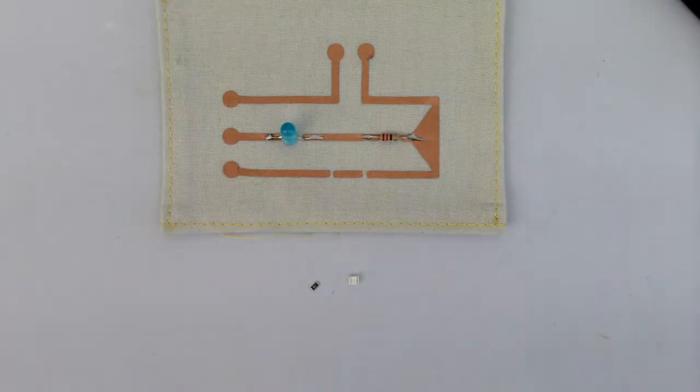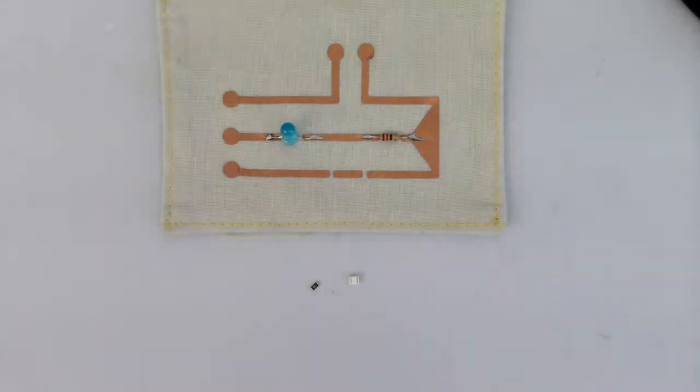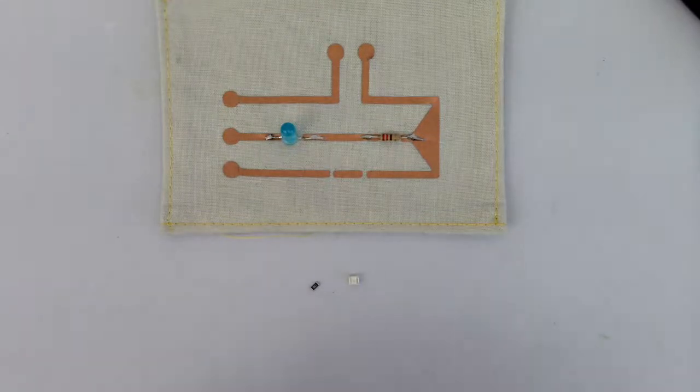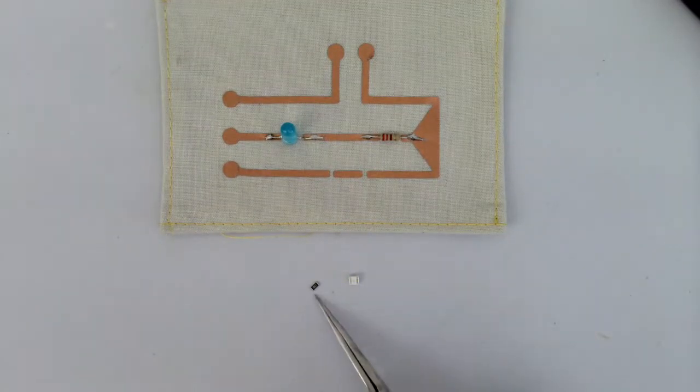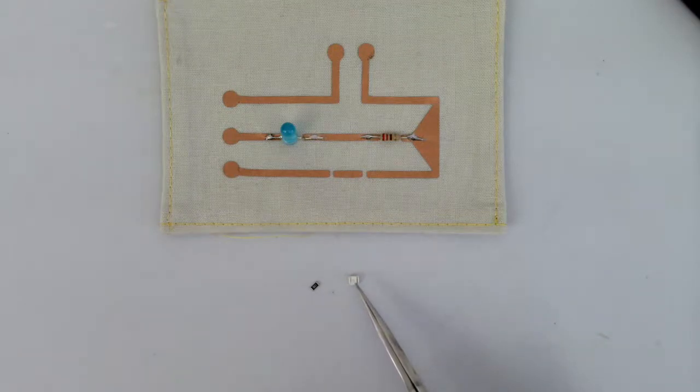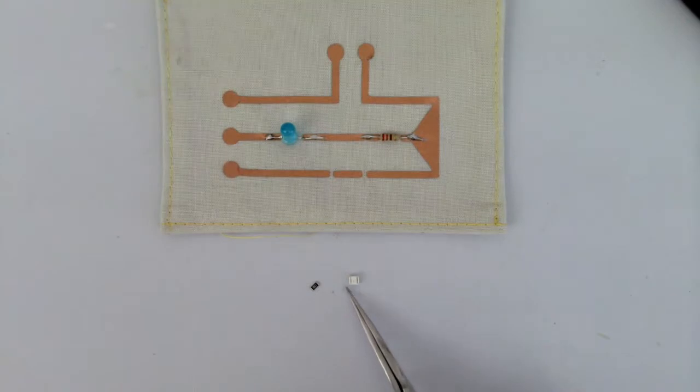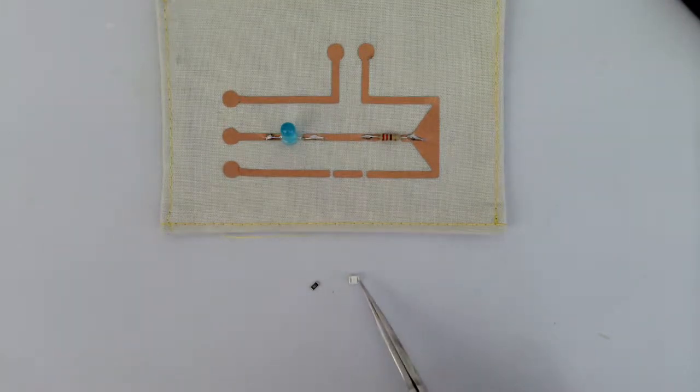Okay, so now we are up to soldering surface mount components on conductive fabric. Just as a reminder about our surface mount components, here I have our LED and this is our 220 ohm resistor. Surface mount components don't have leads, they have solder pads.